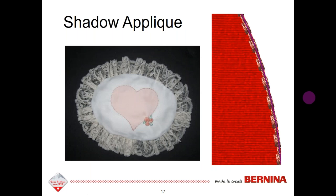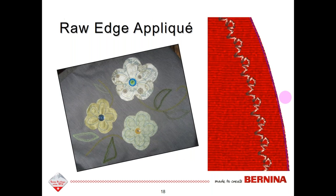With shadow applique, the shape is cut out, placed on a background fabric over the placement line, then covered with sheer fabric, and a decorative stitch is stitched around the shape. I used the decorative bean stitch for this project, which is found after stitch number 350 in object properties. With raw edge applique, the tack down stitch is set inside the applique piece — the edges are not treated at all and can fray. You can use either a regular basic stitch, such as the triple stitch, or a decorative stitch.